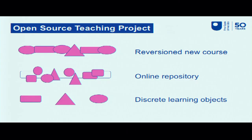John Knowlton led a project called the Open Source Teaching Project. The idea was: can we take the ideas of the open source software community and apply them to teaching? In open source software, you can take bits of code, adapt them, reuse them, and put them into new software. We came up with the idea of having discrete learning objects — discrete bits of teaching content — put into an online repository, which others could then re-version into a new course. We didn't follow this through as much as we could have done, which was a shame.